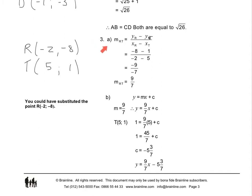In question 3A, we have to determine the gradient of RT: the difference in y-values over the difference in x-values. The difference in y-values, minus 8 minus 1, is minus 9, over the difference in x-values, minus 2 minus 5, is minus 7. A minus divided by a minus becomes a positive, so the gradient of RT is 9 over 7.